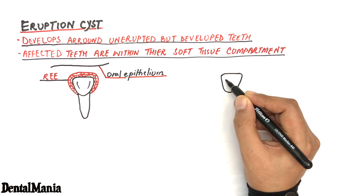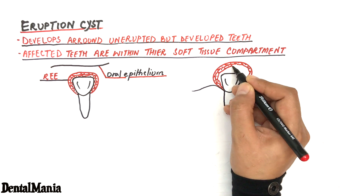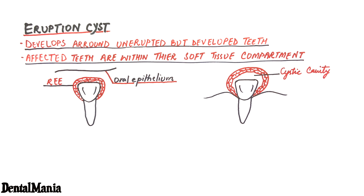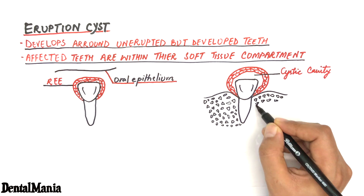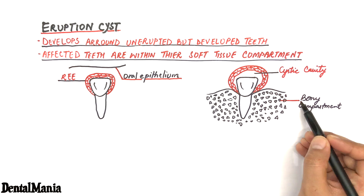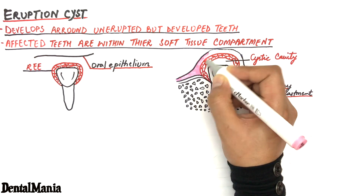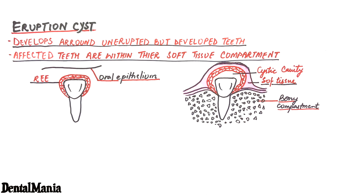The cystic cavity lies within the space between the reduced enamel epithelium and the tooth crown, same as in dentigerous cyst, except for the location of the tooth — a tooth with a dentigerous cyst lies within the bony compartment of the jaws, whereas a tooth with an eruption cyst has progressed through the bone but not the soft tissue yet. This is the reason that eruption cyst is also called the soft tissue analogue of dentigerous cyst.